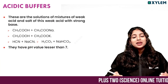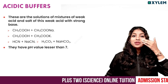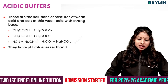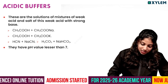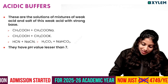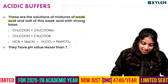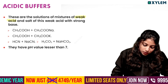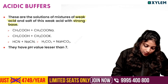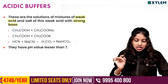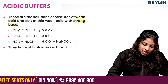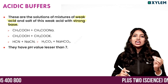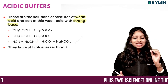Now, what are Acidic Buffers and Basic Buffers? Let's look at the examples of Acidic Buffers. An Acidic Buffer is a mixture of a weak acid and a strong base. These are solutions of mixtures of weak acid and strong base.